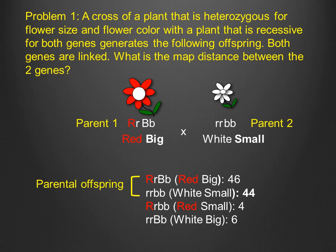Therefore, the two offspring classes that occur with the highest frequency are the parental offspring, and the two that occur with the lowest frequency are the recombinant offspring.